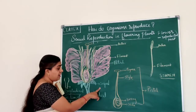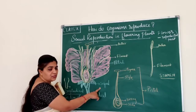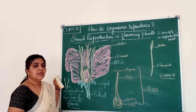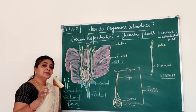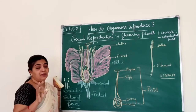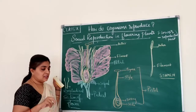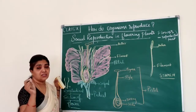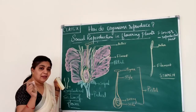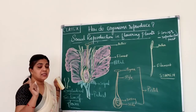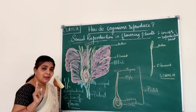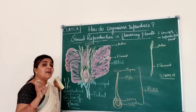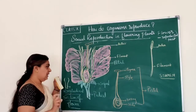The first part of the flower is the sepal, otherwise also called the calyx. The sepal is green in colour and it looks like a leaf — it is a leaf-like structure. The sepal will not help in reproduction; it will only protect the flower when it is in the bud stage.